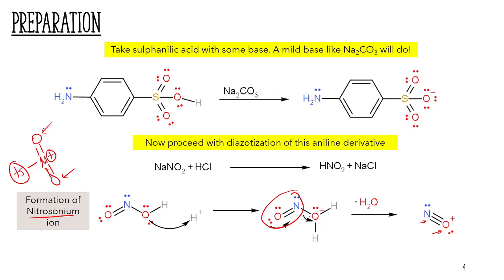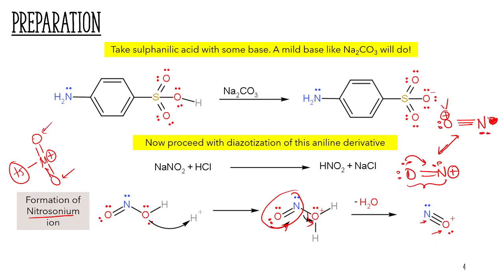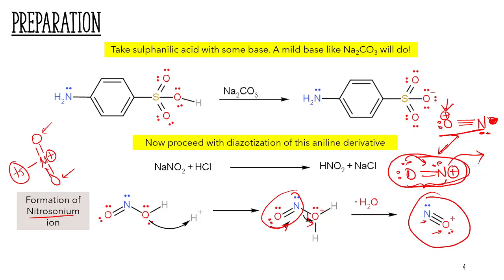You might notice that when water was removed, I sent the lone pair from oxygen to form a triple bond. If I hadn't, I would write oxygen with two lone pairs and N+, which is also a resonating structure of the nitrosonium ion. I prefer the triple-bond form because it's the more stable resonating structure - the positive is at oxygen, not at nitrogen. Some textbooks use the other resonating structure because it captures the fact that the nitrosonium ion always attacks from the nitrogen side, since oxygen can't make four bonds.